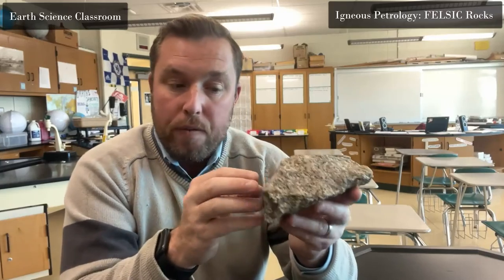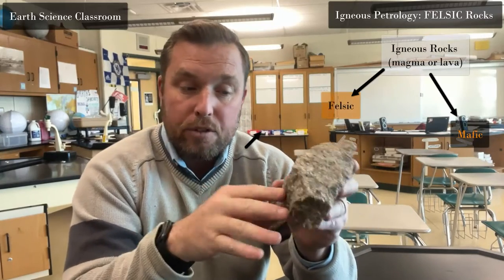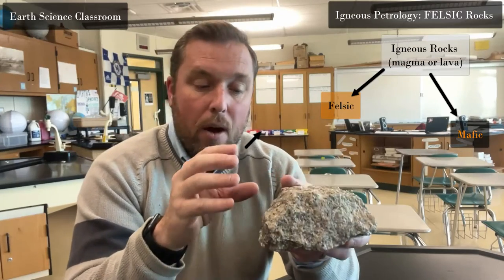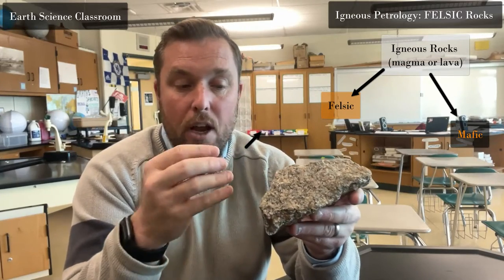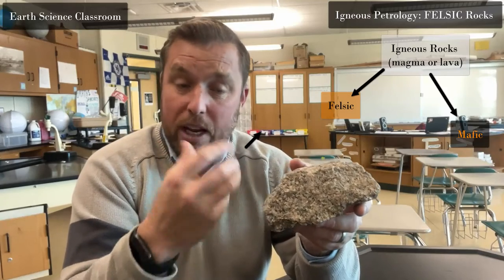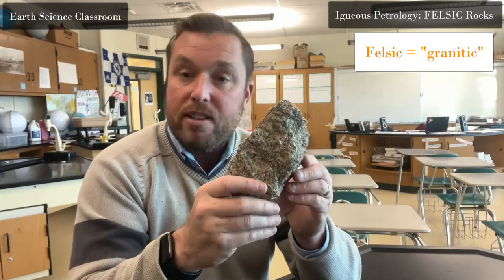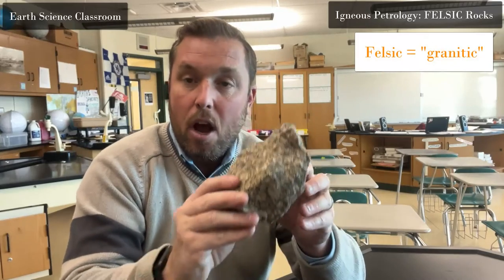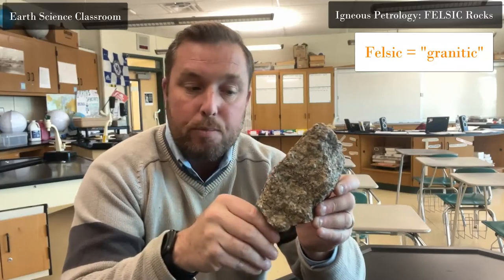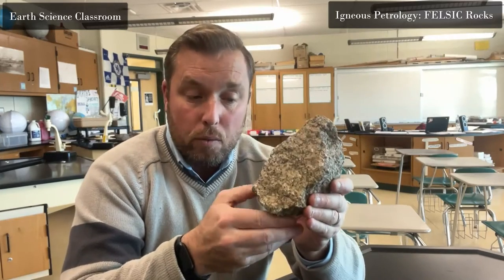We can divide igneous rocks into two main types: one is called felsic and the other is called mafic. In this video we're looking at the characteristics of felsic rocks in general. Most felsic rocks are classified as granitic or granite type — there are other types like tonalite and andesite and various variations, but granite is the most common felsic rock.